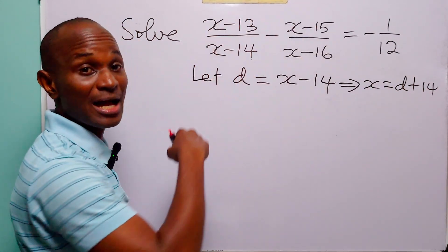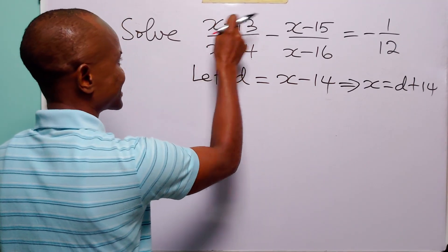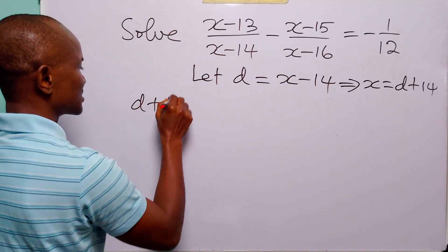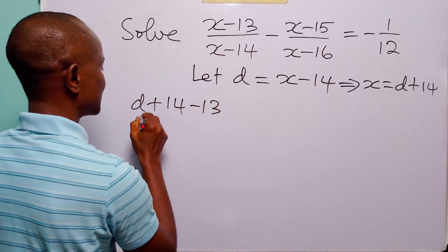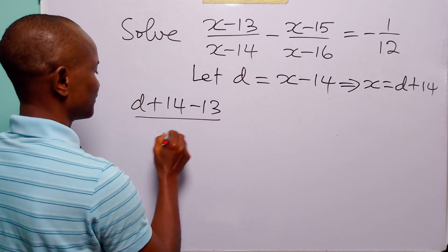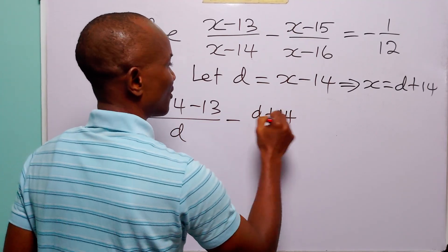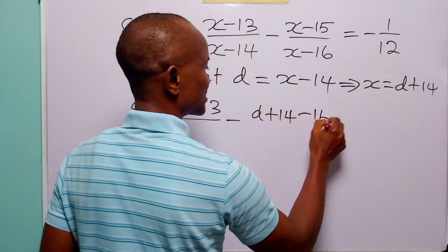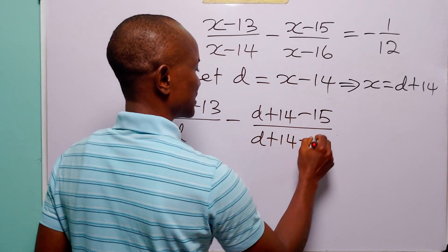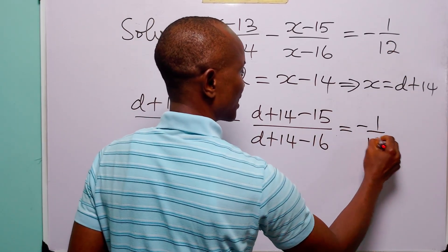Now rewriting the original equation in terms of d: in the numerator we have x minus 13, but remember that x is now d plus 14, so that becomes d plus 14 minus 13, divided by x minus 14 which equals d. Minus: we have d plus 14 minus 15, divided by d plus 14 minus 16, and this is still equal to minus 1 over 12.